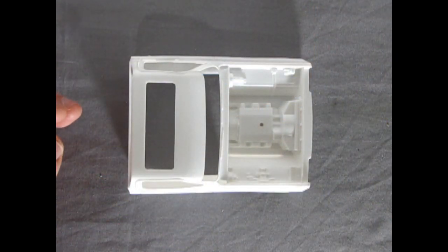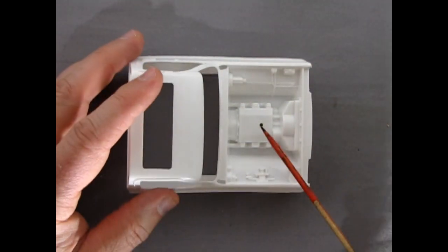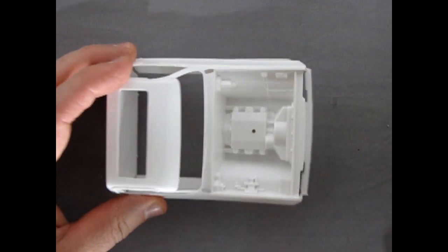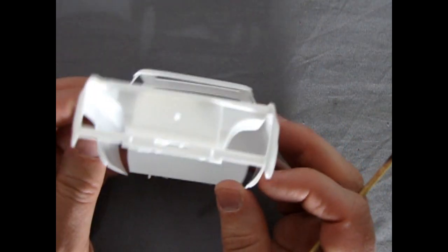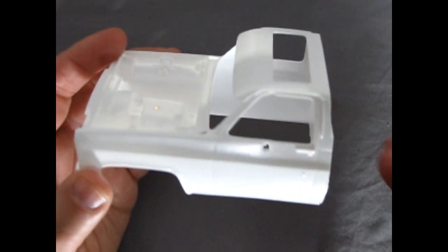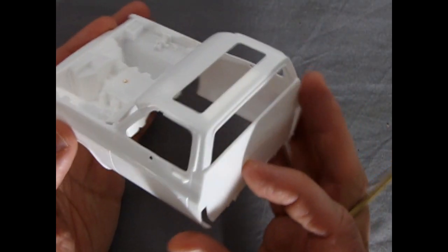And here we have the cab of our tow truck and as you can see the engine is molded in place so this will be very interesting to try to paint and whatnot. It does have some nice detail. You can see the grill on the radiator. Very nicely done. The sides look nice.